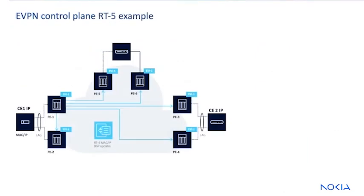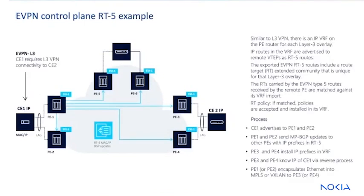Similar to L3 VPN, there is an IP VRF on each PE router for the Layer 3 overlay. IP routes in the VRF are advertised to remote VTEPs as RT5 routes. The exported EVPN RT5 routes include a route target extended community unique for that Layer 3 overlay. The route targets carried by the EVPN type 5 routes received by the remote PE are matched against its VRF import route target policy. If matched, they're accepted and installed into that VRF, just like it works in Layer 3 VPN.